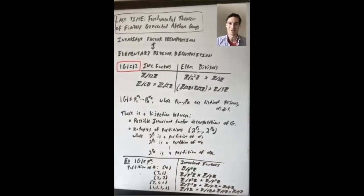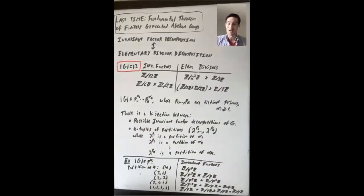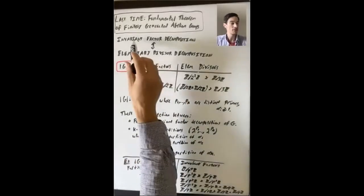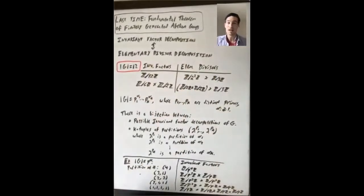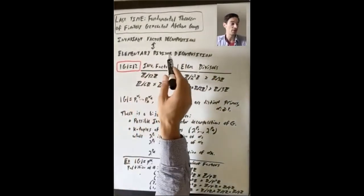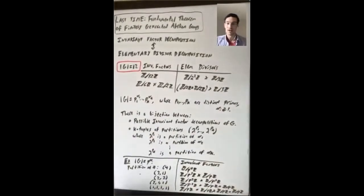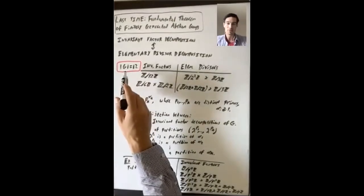In the last lecture, we talked all about the fundamental theorem of finitely generated abelian groups, and we particularly focused on the case of finite abelian groups. We saw two different ways to write a finite abelian group as a direct product of cyclic groups. So just as a review, here's an example from last time. Let's take an abelian group of order 12.